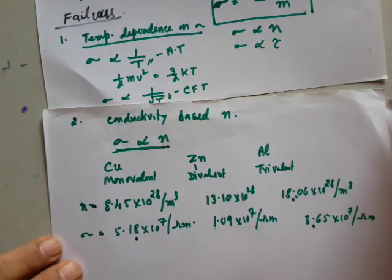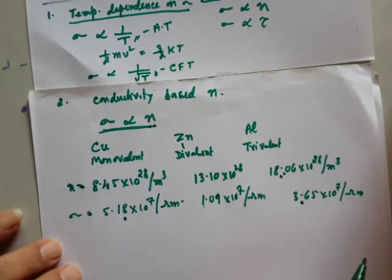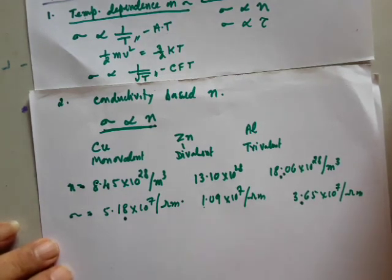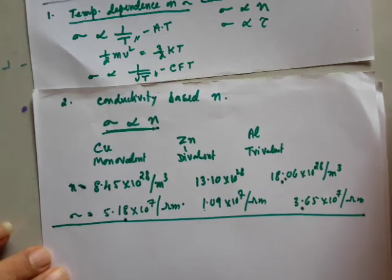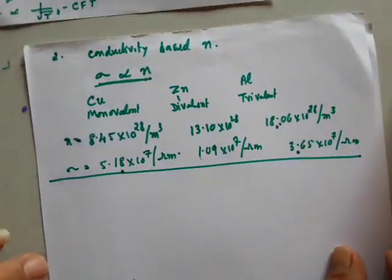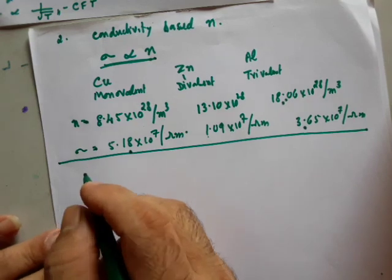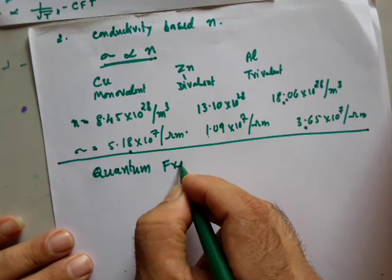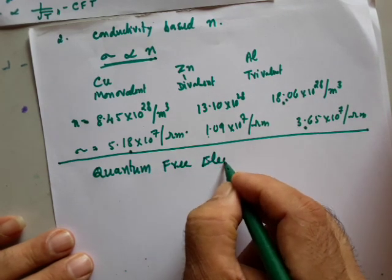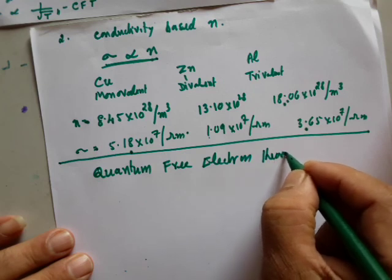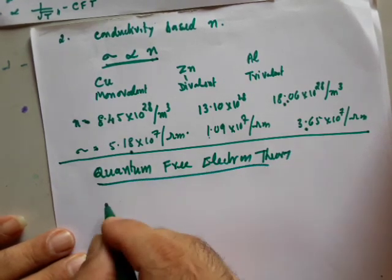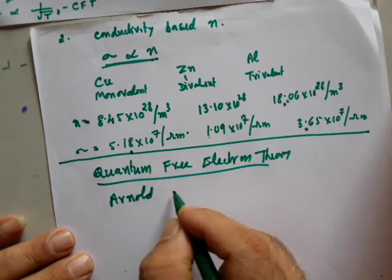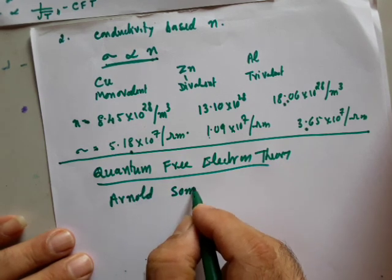These are the two major drawbacks of the classical free electron theory. The question is how to overcome these and how to explain the conductivity of metals. The classical free electron theory failed to explain the fundamental concept, and this is the reason a new theory was developed — the quantum free electron theory, given by scientist Arnold Sommerfeld in the year 1928.